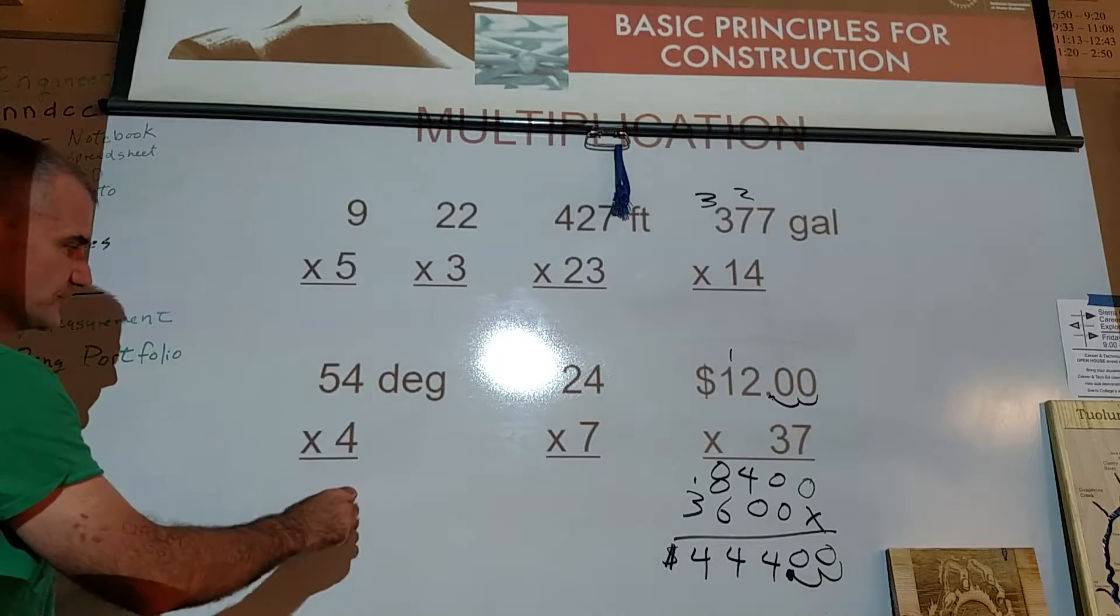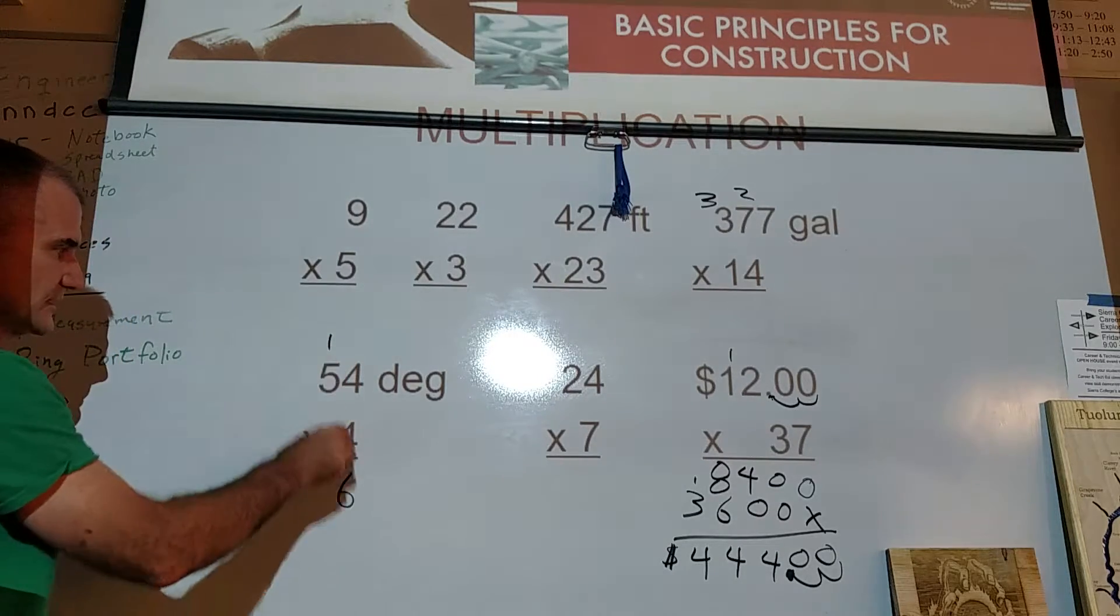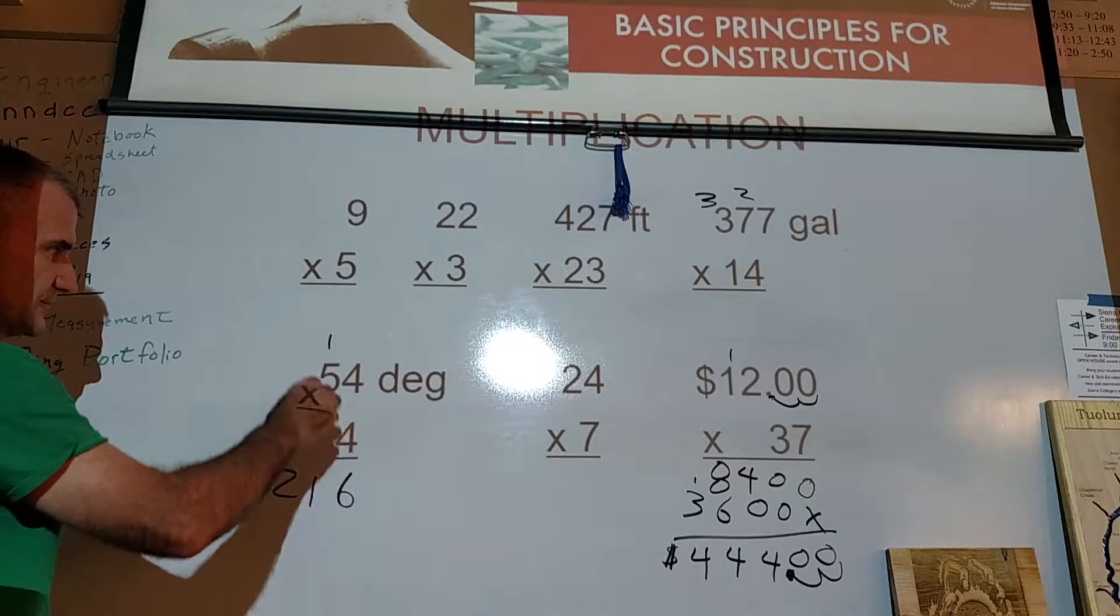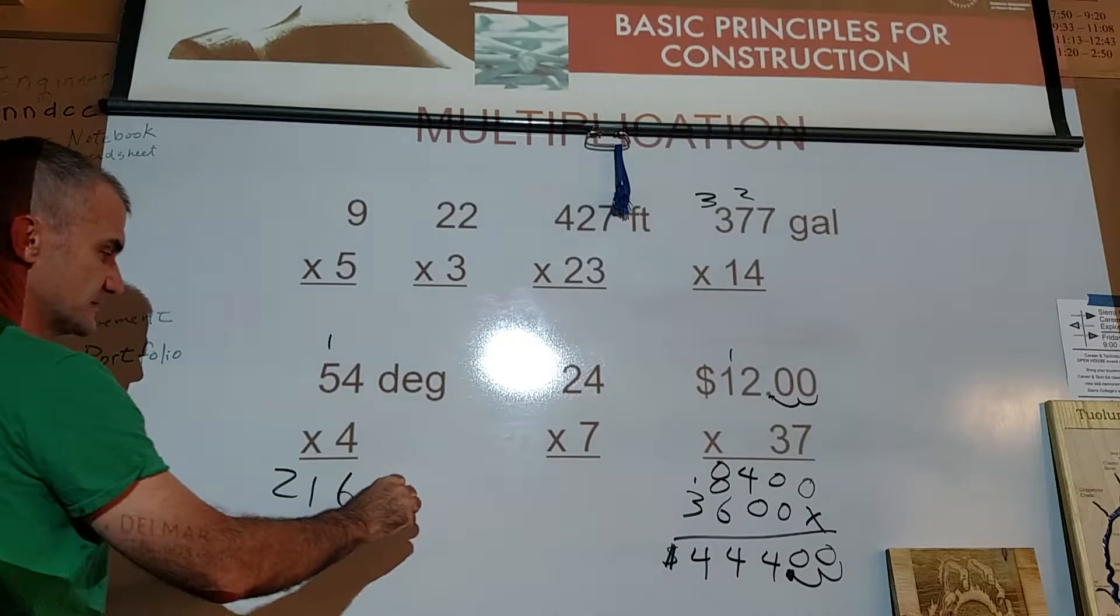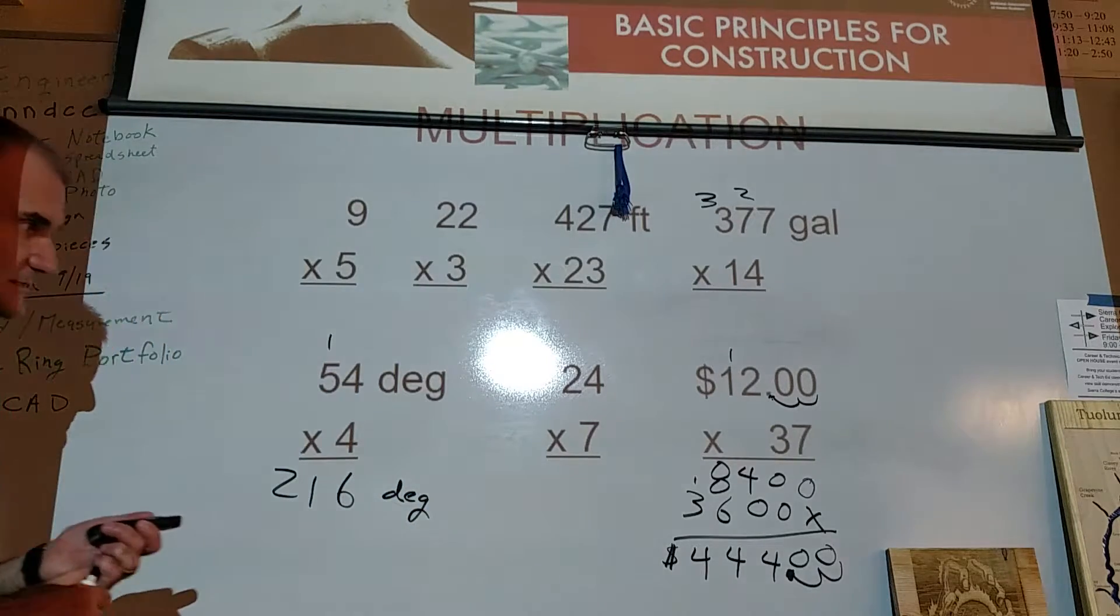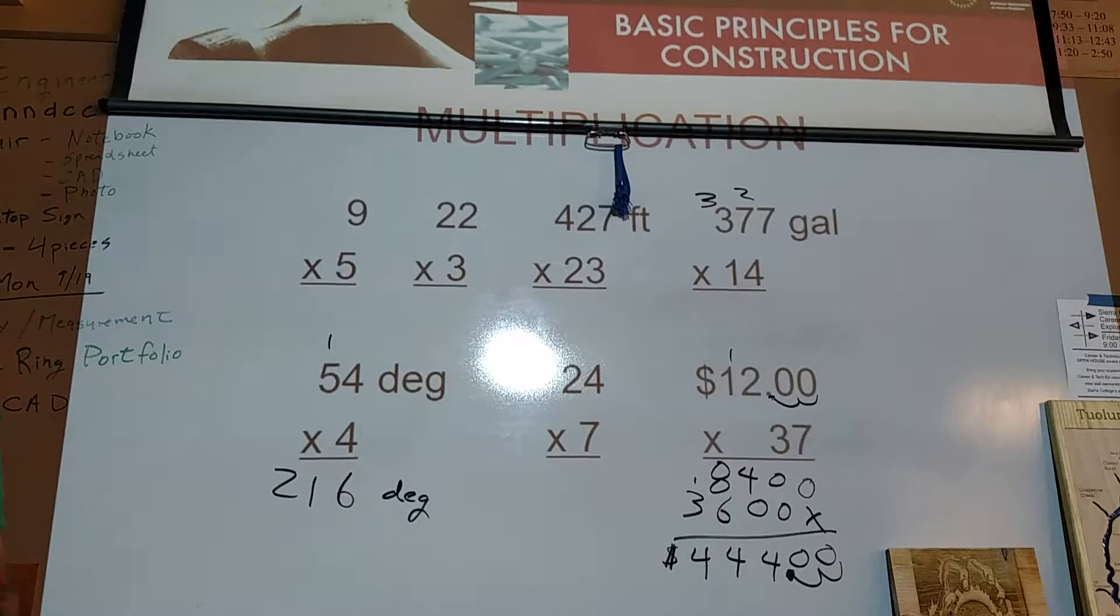I'll just do one more. 4 times 4 is 16, carry the 1, 21. 54 times 4 is 216 degrees. Don't forget your units there.